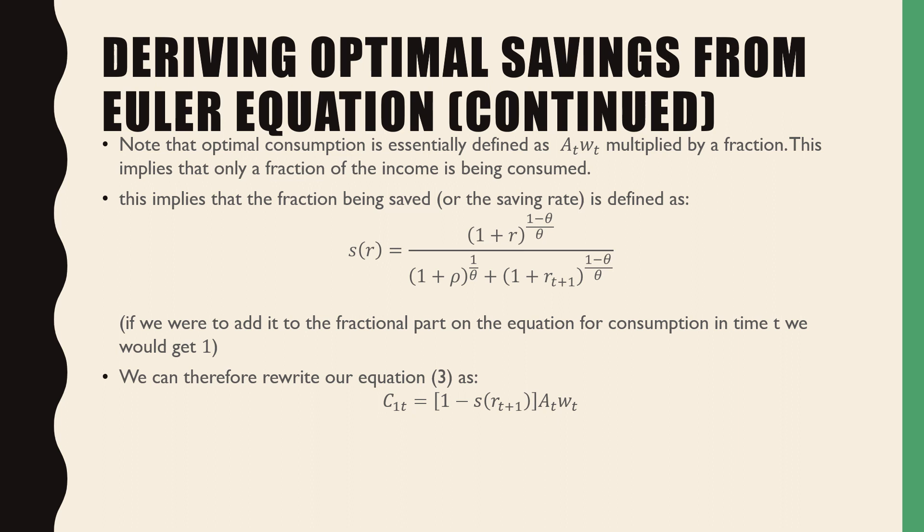So what's unique about this is that if we were to add this to the fractional part in the equation on the previous slide, we would get 1. We can therefore rewrite equation 3 as 1 minus our savings rate times AtwT.